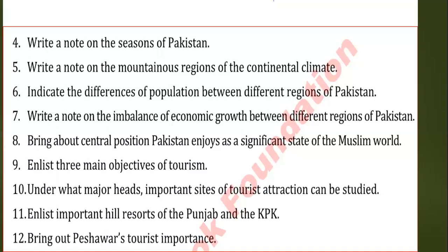Next question: List the important hill resorts of Punjab and KPK. Answer on page 55, second-last and last paragraphs. Murree and Patriata are the most attractive hill stations in Punjab. Moving higher within a radius of 60 to 70 kilometers, Nathiagali and Changla Gali are hill stations in KPK. The beautiful valleys of Kaghan and Swat are also in KPK. Naran has Lake Saif-ul-Malook, one of the most ravishing high-altitude lakes in the world. In the valley of Swat, Matta, Malakand, Bahrain, and Kalam are well-known tourist attractions. Malam Jabba is emerging as a ski resort in the same area.